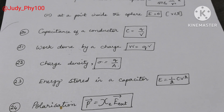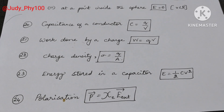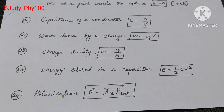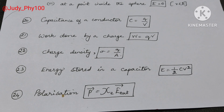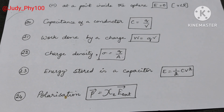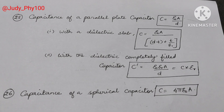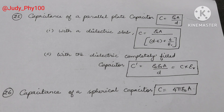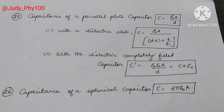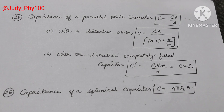Polarization vector: P is equal to chi E into E, the external electric field. Capacitance of a parallel plate capacitor: C is equal to epsilon naught A divided by d, where d is the distance. With a dielectric slab: C is equal to epsilon naught A divided by (d minus t plus t divided by epsilon r).